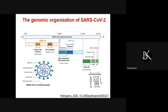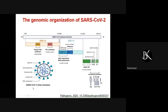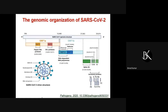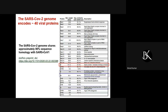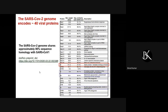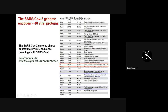The SARS coronavirus 2 genome encodes several non-structural as well as structural proteins. Non-structural proteins include the E, M, and spike proteins, and others encoding RNA-dependent RNA polymerase and many other proteins — altogether encoding more than about 40 viral proteins. The SARS-2 genome shares approximately 80 percent sequence homology with SARS coronavirus 1. The 20 percent difference between these two viruses is what is playing the key difference in what we are seeing and facing right now.